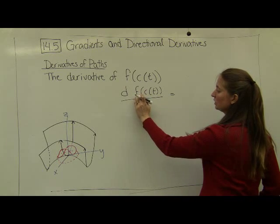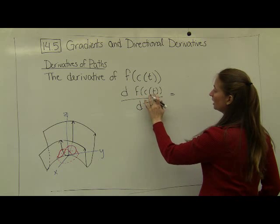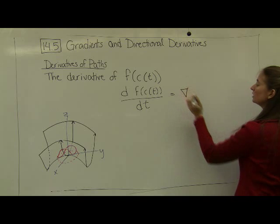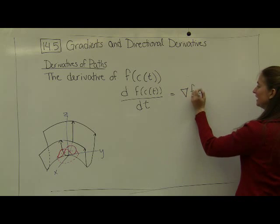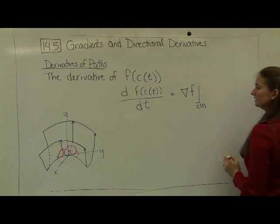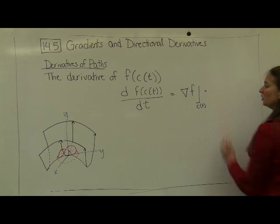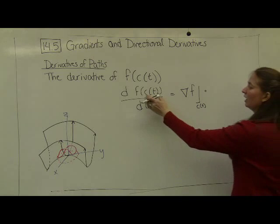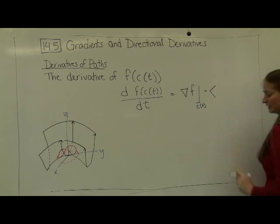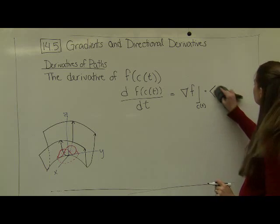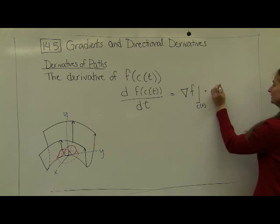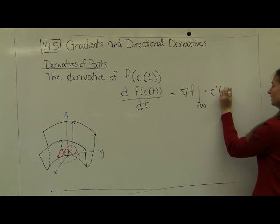But notice that with our f function, our inputs are now t's. So our f function, the derivative, we're going to represent as the gradient of f evaluated along the path c of t, multiplied by, or dotted with, our path c of t. And we're going to represent our path as a vector valued function. So the derivative of our inside function, c prime of t.